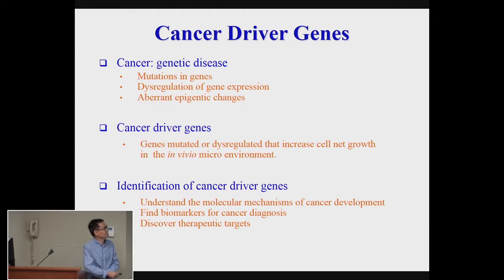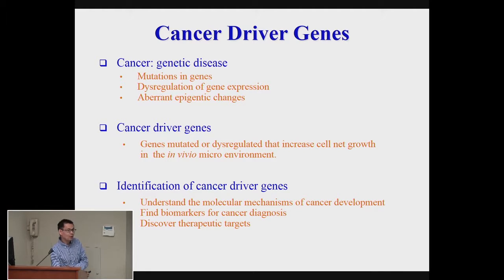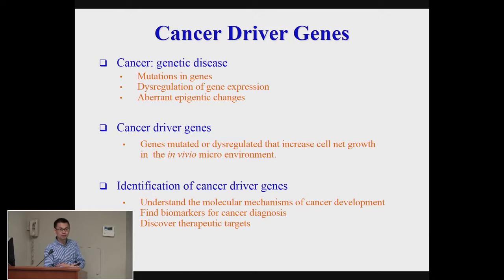We know cancer is a genetic disease, caused by mutations in genes or dysregulation of cellular gene expression, and also some other genetic changes. If in a tumor, we found that typically there are thousands of mutations and thousands of genes that are dysregulated. The question is really which genes or which kind of changes drive the development of a cancer.